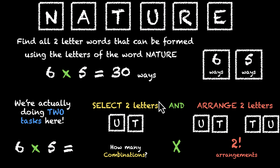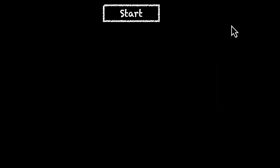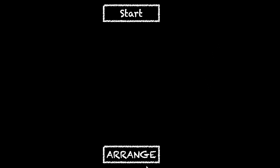We are doing two tasks: we are selecting and arranging. If we do them together, we have six times five — 30 ways. But if we do them step by step, if we first select and then arrange, we have these two tasks. We don't know how many ways to do the selection task, but we do know in how many ways to do the arranging task — arranging two letters. We start with a six-letter word, nature, and we end with a two-letter word using the letters of the word nature.